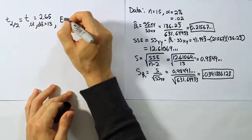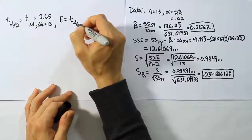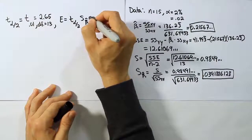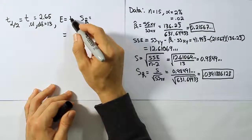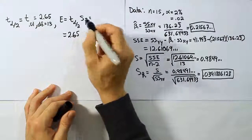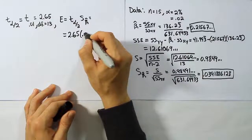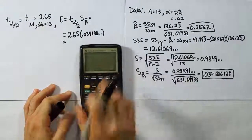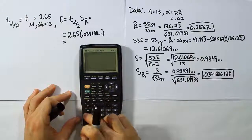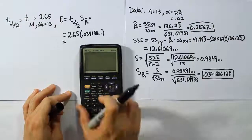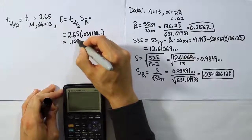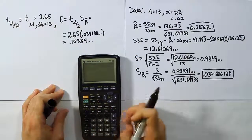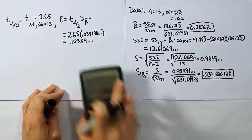Now we calculate the margin of error. The margin of error formula is the table value times the standard error for the estimator — that's T alpha/2 times S_beta1_hat. So that's 2.65 times 0.039188, which gives us 0.10385. I'll store this margin of error value in my calculator under X.